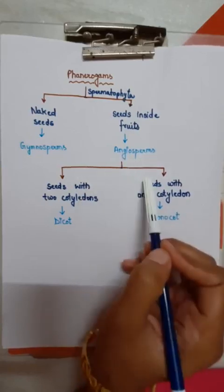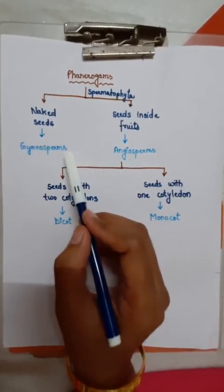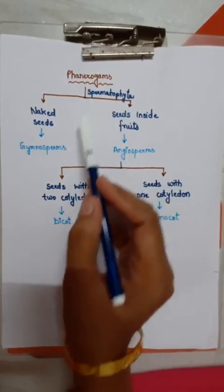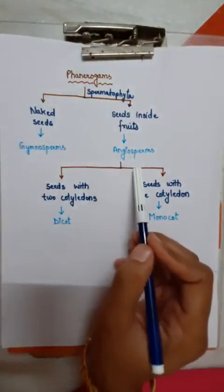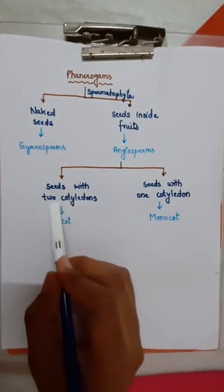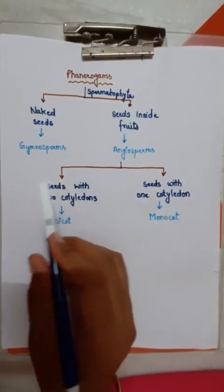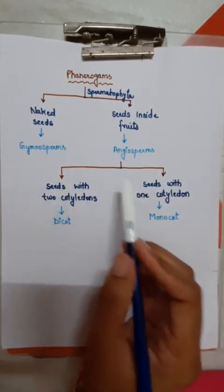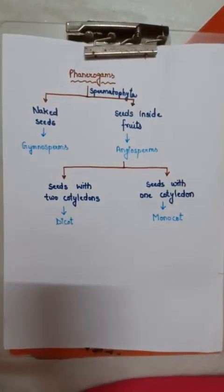Angiosperms are divided into two parts. Gymnosperms and Angiosperms come under Spermatophyta. Angiosperms are divided into two classes: Dicotyledons, meaning two cotyledons, and Monocotyledons, meaning one cotyledon. These are the two classes of Angiosperms.